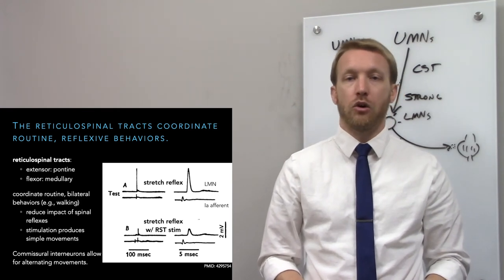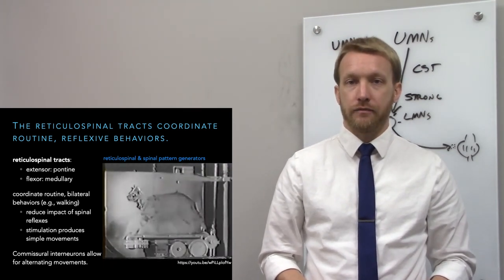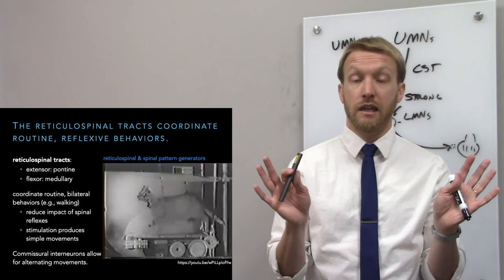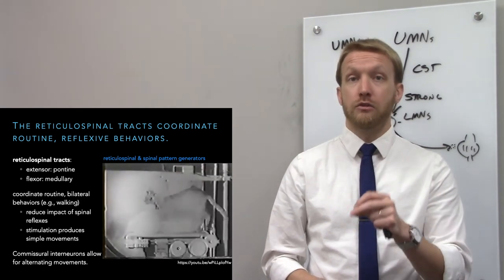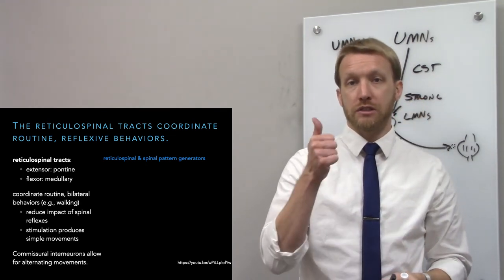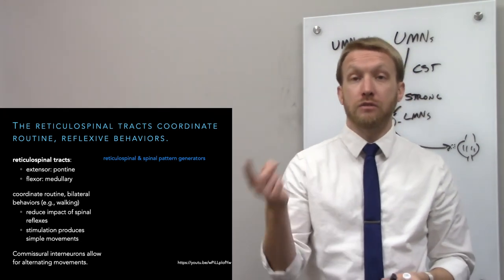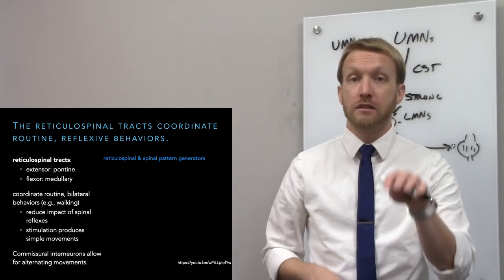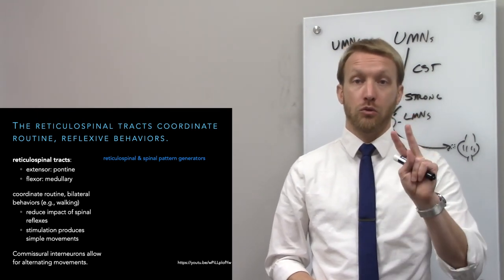A wonderful example is a decerebrate cat — all fiber tracts above the brain stem cut off, so it has a cortex but it's not connected to anything. Put on a treadmill, it goes from walking to galloping to running, with no cortex to do this. That motor output is purely driven by reticulospinal tract input and spinal pattern generators, which receive sensory feedback from the treadmill and coordinate those routine bilateral movements.